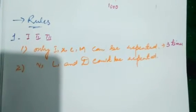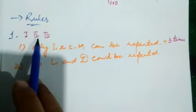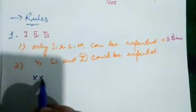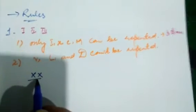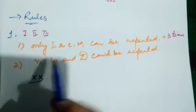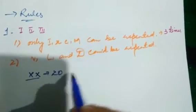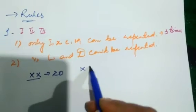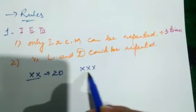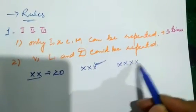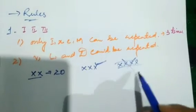For example, XX — X appears twice, X equals 10, so 10 plus 10 is 20. You may have seen XXX three times, but you would never see XXXX four times — that is incorrect. According to the rule, we can only repeat these symbols three times.